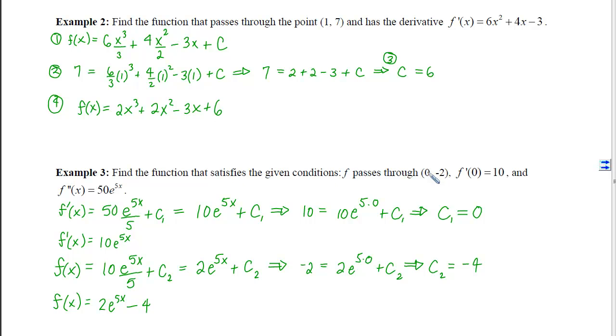Double check, if I plug 0 in, I get 2 - 4, which is -2. And if I take the derivative of this, I would move through the 2, hit the e, leave it alone, and multiply by 5, which would give me that f' that I needed.